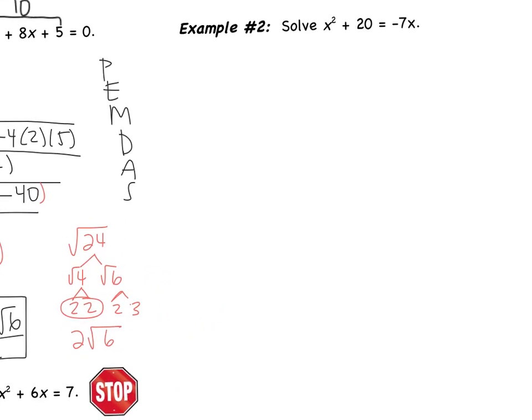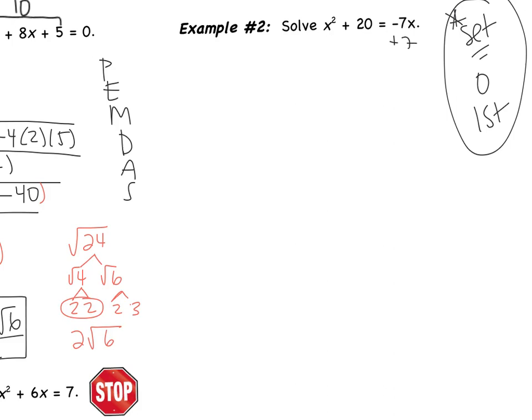Example number 2 says x squared plus 20 equals negative 7x. What's different is that this is not set equal to 0. You always have to have your quadratic set equal to 0 first. So the first thing I'm going to do is add the 7x, giving x squared plus 7x plus 20 equals 0. Now I can do the quadratic formula. Checking factorability: two numbers that multiply to 20 and add to be 7 — there are no two numbers like that. So we are going to use the quadratic formula.